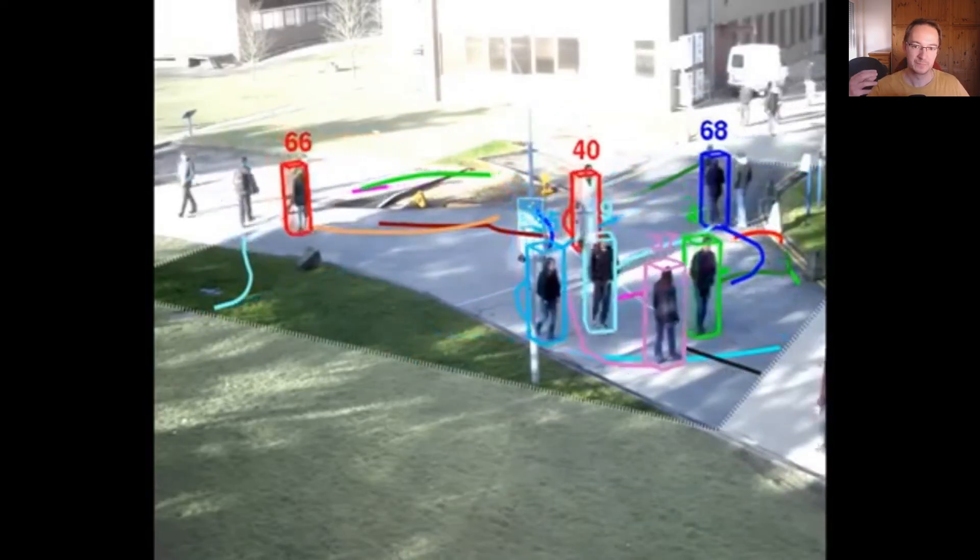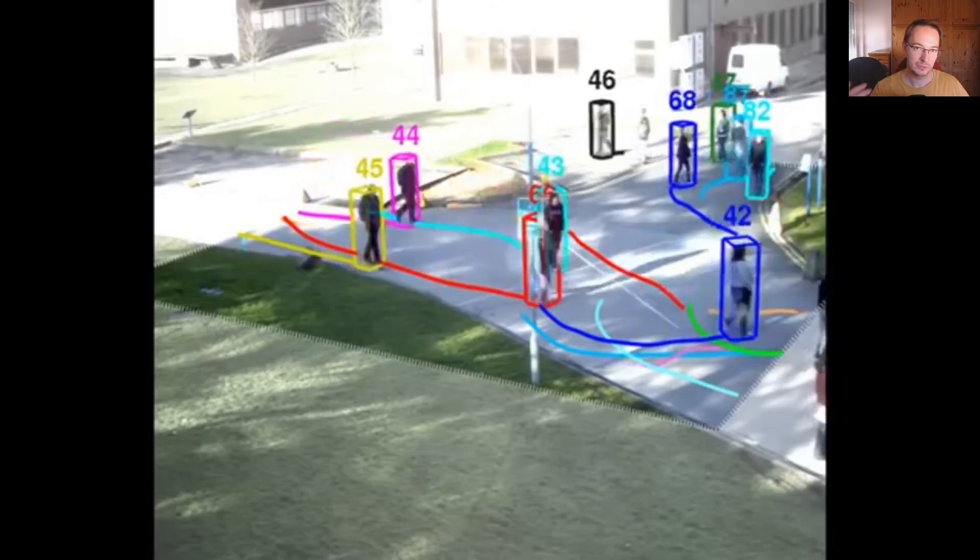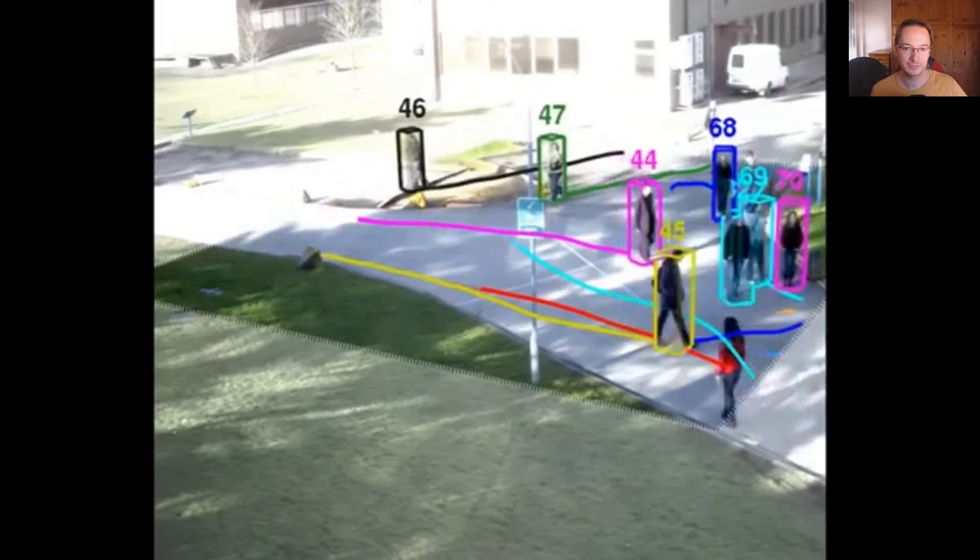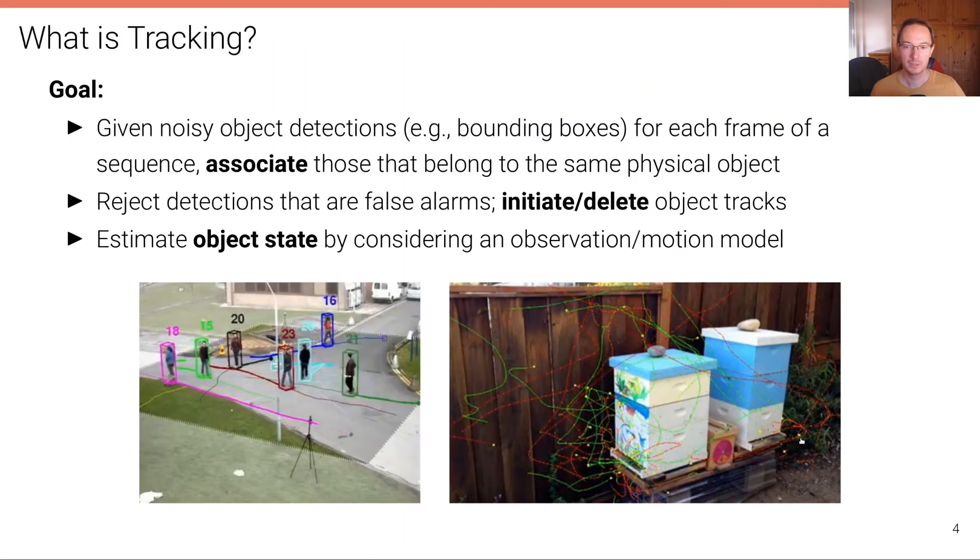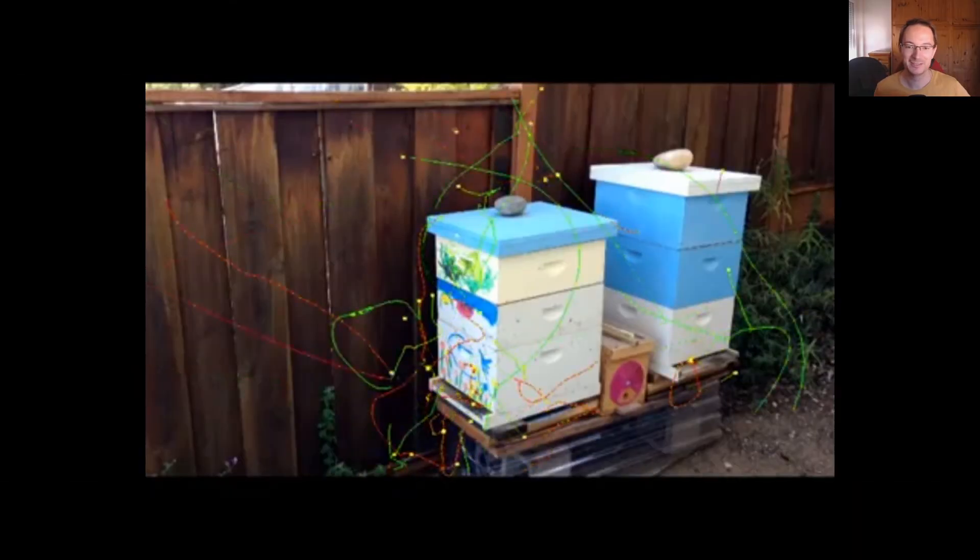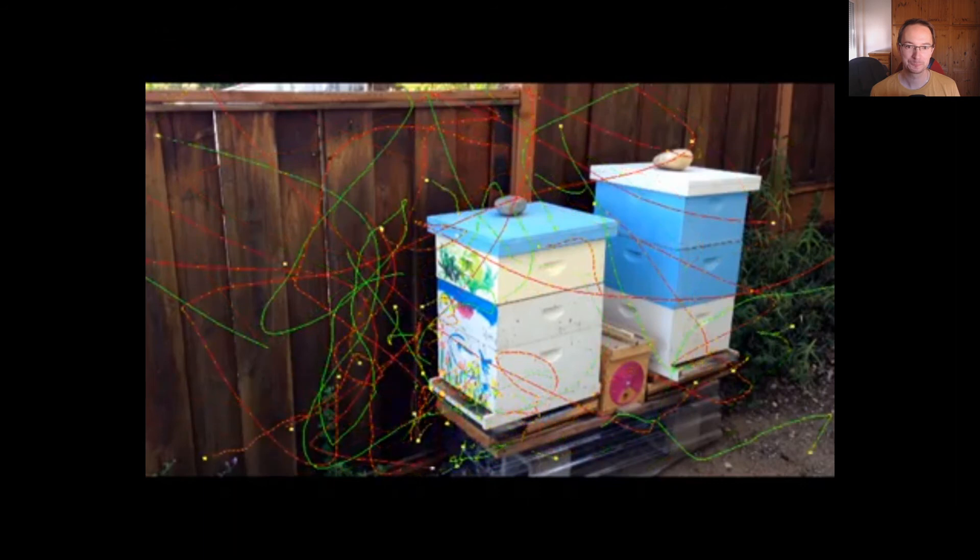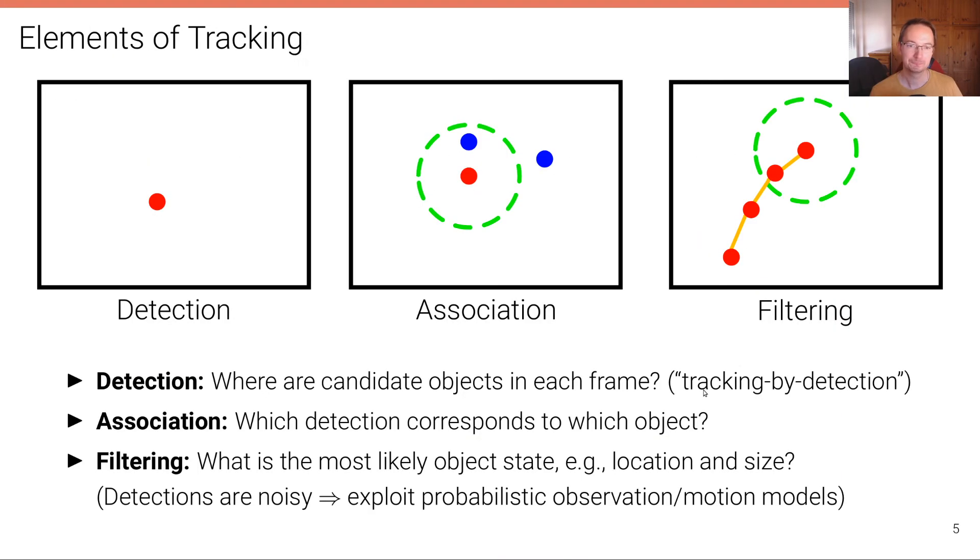This is actually these are videos from one of the earliest and most popular benchmarks for evaluating object trackers called PETS. And here's another example, very different application tracking bees in a beehive.